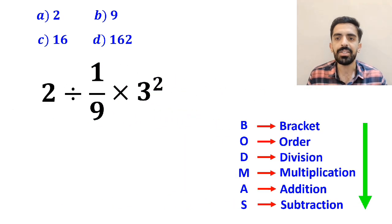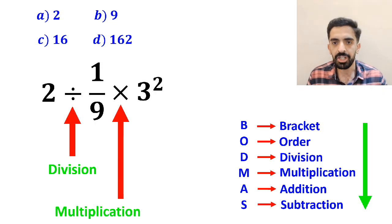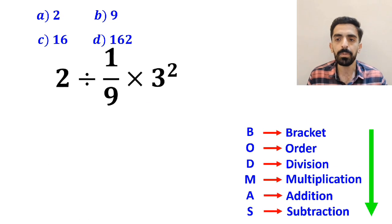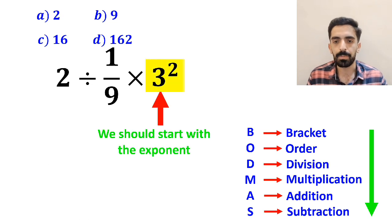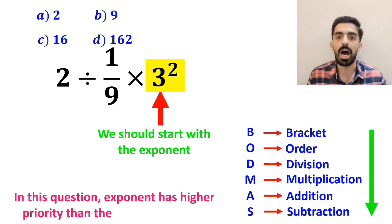As you can see in the image, in this problem, we have a division sign, then a multiplication sign, and finally exponent. According to the BODMAS rule, we should start with the exponent, because in this question, the exponent has higher priority than the other operations.